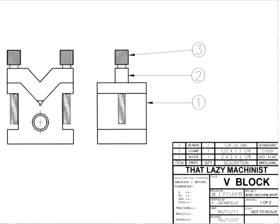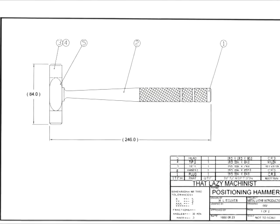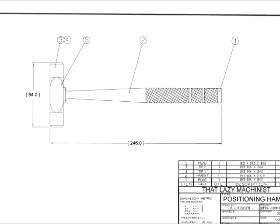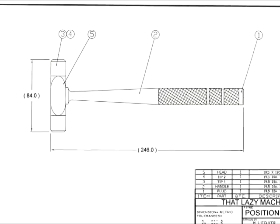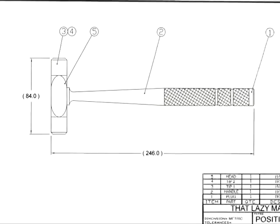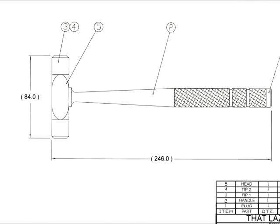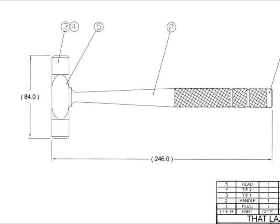Here we're looking at the assembly drawing of a V-block project. Since there are no dimensions on this assembly drawing, there are no tolerances stated anywhere — neither on the drawing itself nor in the header. If an assembly drawing does have a dimension, as with this hammer project assembly drawing, that dimension must be a reference dimension and is not usable for manufacturing.